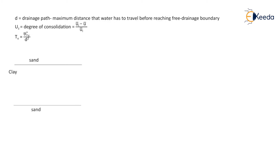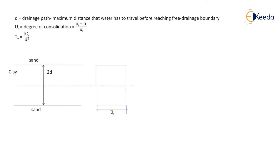Now let's consider a clay layer sandwiched between two sand layers. Drainage will occur from both sides, so the drainage path will be half the height of the clay layer, or the height will be twice the drainage path. At the central line of the clay layer, we can draw the pore water pressure distribution diagram. Since the area of the clay layer is very large, the pore water pressure distribution diagram will be rectangular, with breadth equal to ūi — the initial pressure at time t = 0.